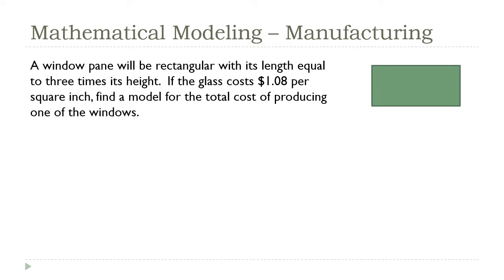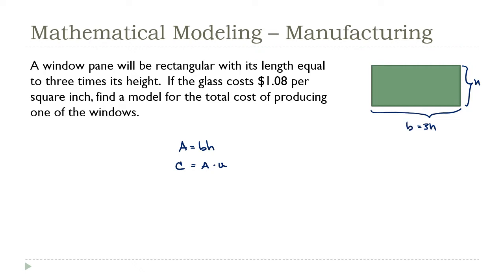The area is equal to base times height, and the total cost is going to be equal to the area times the unit cost. The length is three times the height, so if this is h, then the base down here must be 3h. Let's call it b for the base so that it matches the variables in the area formula.